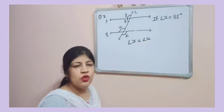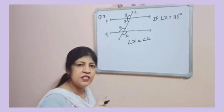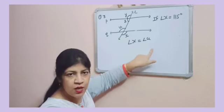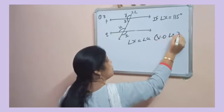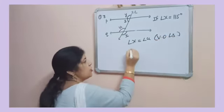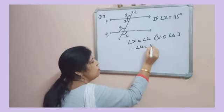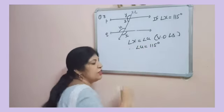Angle X is equal to angle U. In geometry, you have to write the reason of each and every step. Why they are equal? Because they are vertical opposite angles. Therefore, angle U will be 115 degrees.